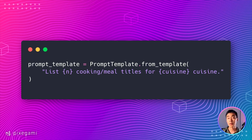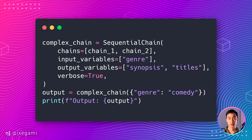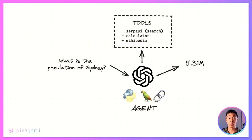Langchain is an AI toolkit that lets you build complex applications on top of LLMs like ChatGPT. You can use them to create prompt templates and you can turn them into chains, which you can link together in a sequence. You can also use it to create agents with context awareness and reasoning ability.